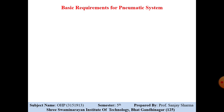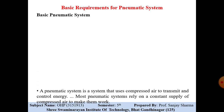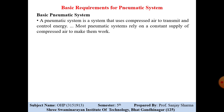Let us see what is the basic requirement for the pneumatic system. A pneumatic system is a system which works based on compressed air. Definition-wise, a pneumatic system is a system that uses compressed air to transmit and control energy. Most pneumatic systems rely on a constant supply of compressed air to make them work.